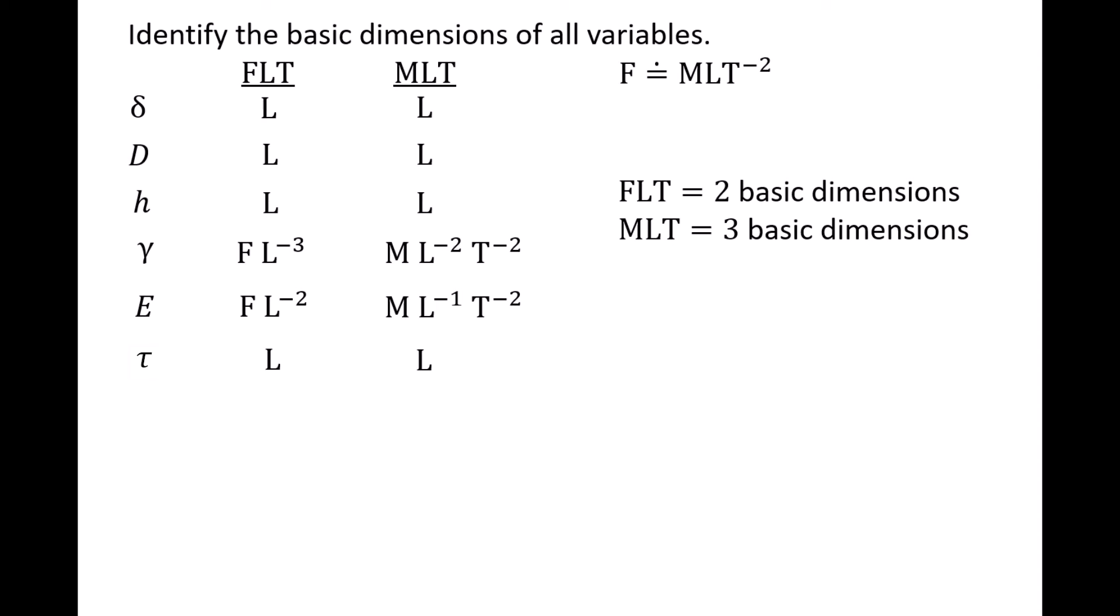In situations where the number of basic dimensions in the FLT and MLT systems differ, we select the smaller of the two values for the number of reference dimensions k, so k is equal to 2 in our scenario.